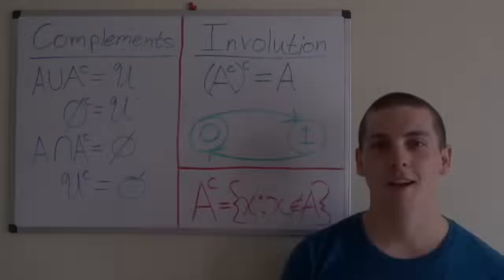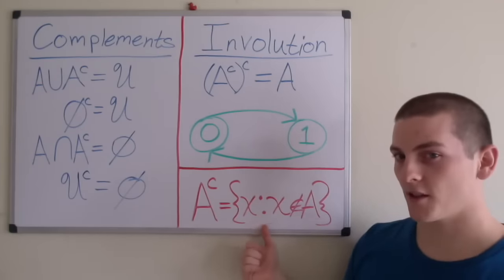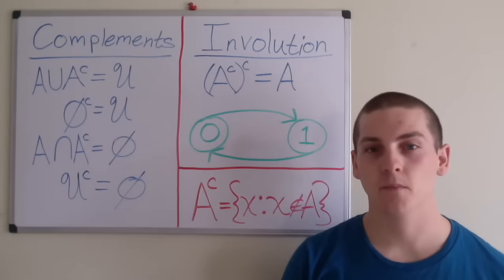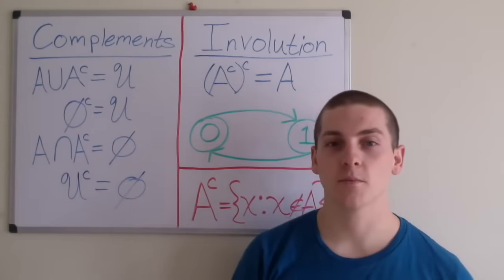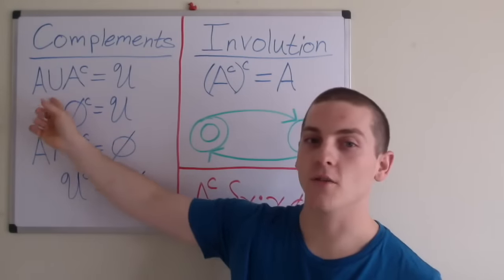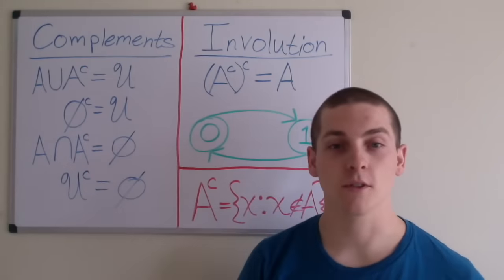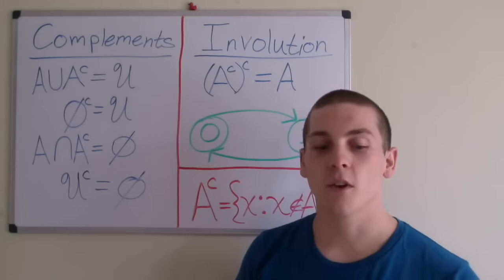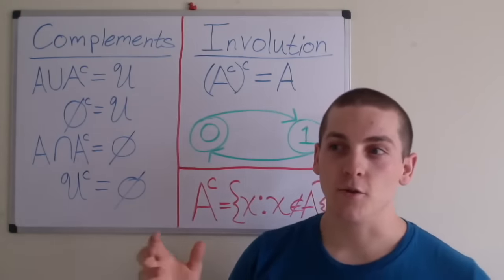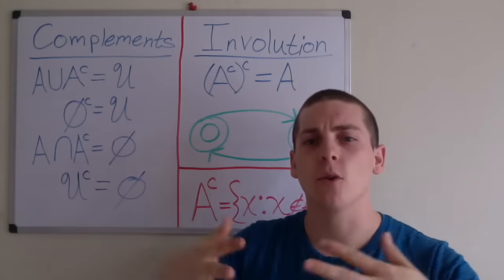I want to begin this video by reviewing the definition of complements. The definition of the complement of a set — for instance, the complement of A — equals the set containing elements x such that x is not an element of A. I will now be going over two new algebraic laws for sets. The first is the law of complements, which states that if we take the union of a set and its complement, it equals the universe. Or, if you take the complement of the null set, it equals the universe. Furthermore, the intersection of a set and its complement is the null set — because if you have the set A and you are intersecting it with everything not inside A, there's clearly not going to be any overlap.